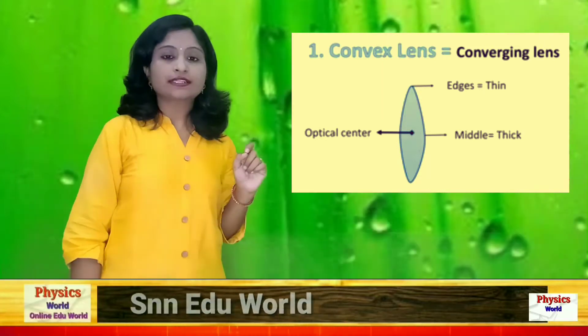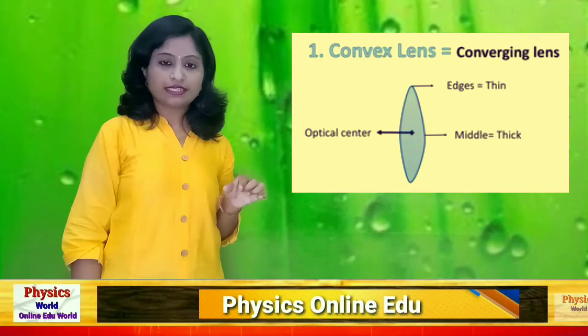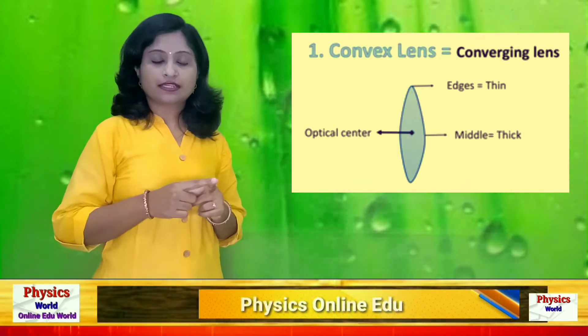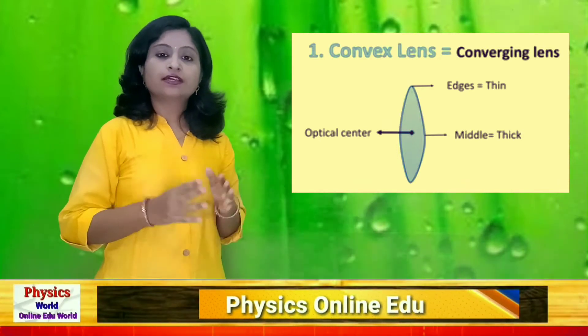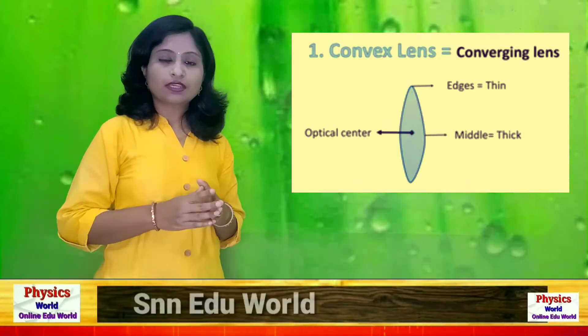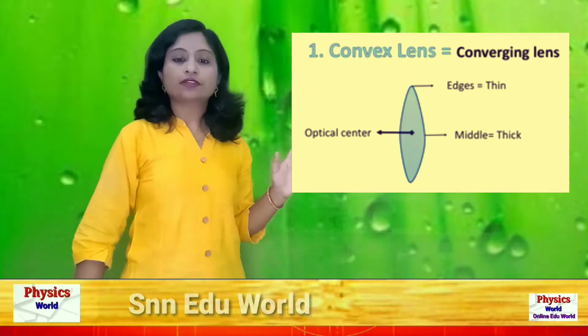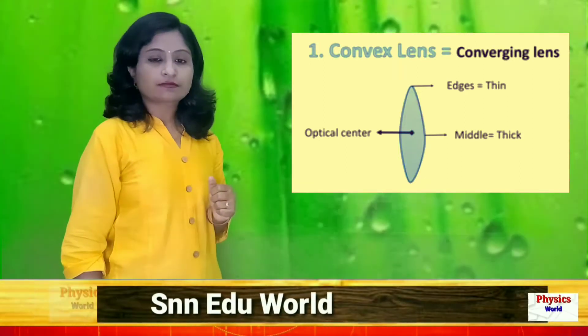The top most and bottom most lines — the edges of the lens — are thin, and the center is thick. This is the structure of the convex lens.